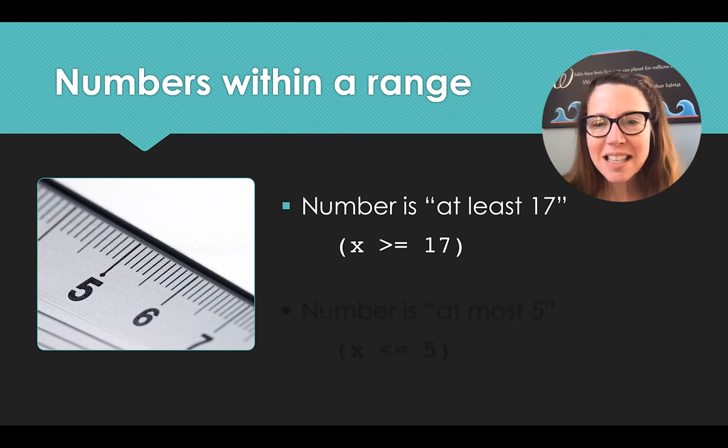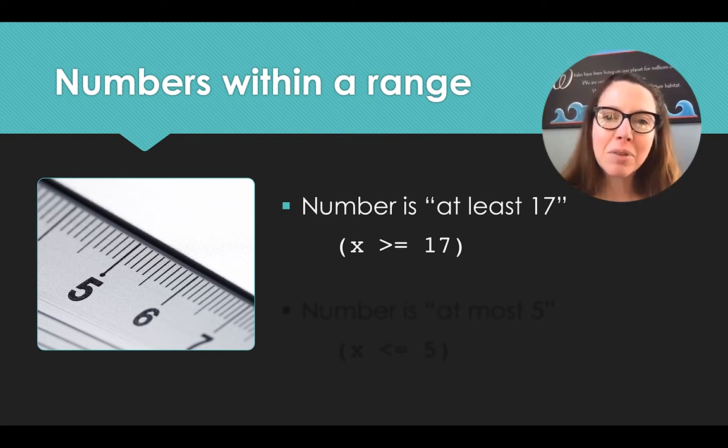But what I actually want to be is 17 or greater. I want to be at least 17. So in this case, if we have to be at least 17, that means the lowest we can be is 17 and we can be any number higher. X is greater than or equal to 17.